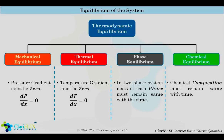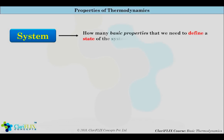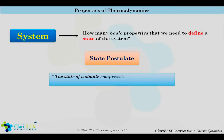After discussing properties and state of the system, one obvious question arises: how many basic properties do we need to define a state of the system? That means if we have a certain number of properties, then the remaining properties can be calculated from these basic properties. The answer is given by the state postulate. The state postulate states that the state of a simple compressible system is completely specified by two independent and intensive properties. It is difficult to understand what is a compressible system and what are independent properties.